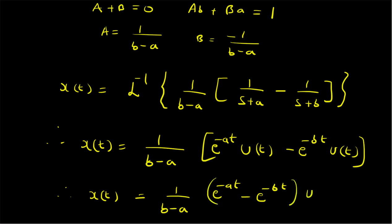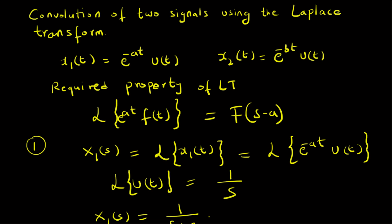Therefore the convolution integral — the output of the convolution of x1(t) and x2(t) — is x(t) = 1/(b - a) · [e^(-at) - e^(-bt)] · u(t). To summarize, we have looked at the convolution of two signals using the Laplace transform. In this example we have two signals: x1(t) = e^(-at) · u(t) and x2(t) = e^(-bt) · u(t). This problem is based on the convolution property of the Laplace transform.